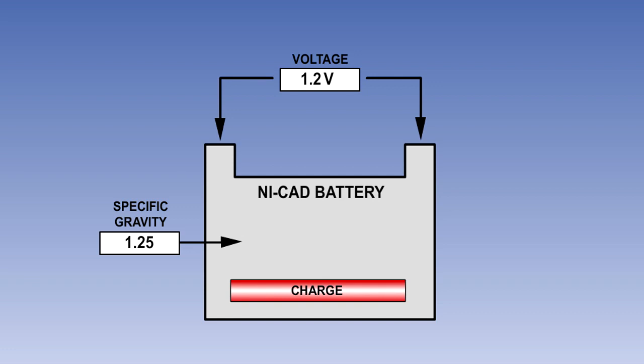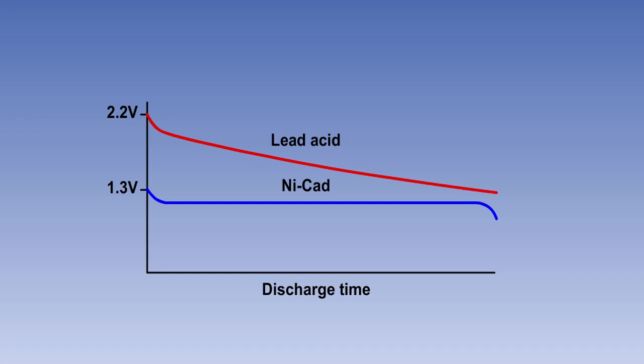Unlike the lead acid battery, the voltage variation from fully charged to fully discharged is very slight. Here is a graphical representation of a comparison of a lead acid battery against that of a NICAD battery during discharge. As you can see, the NICAD battery holds a much more constant voltage during the discharge cycle.